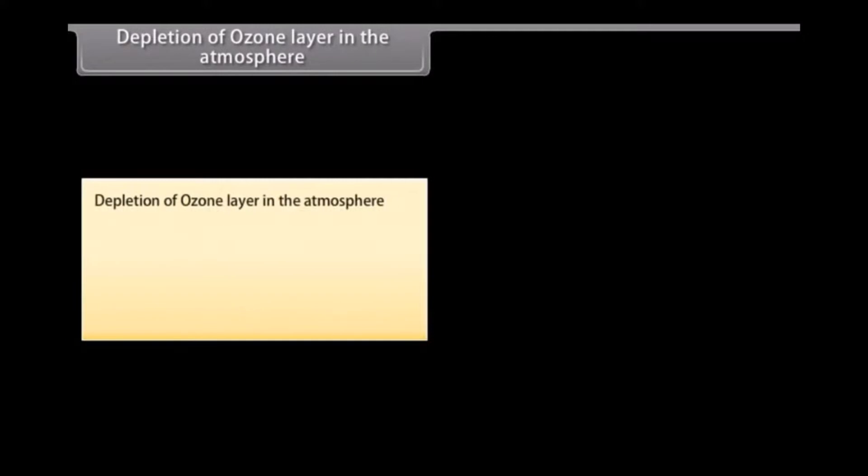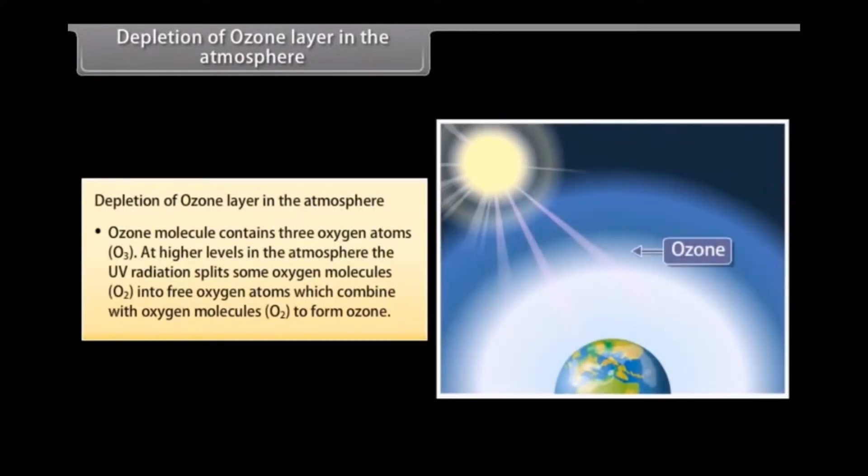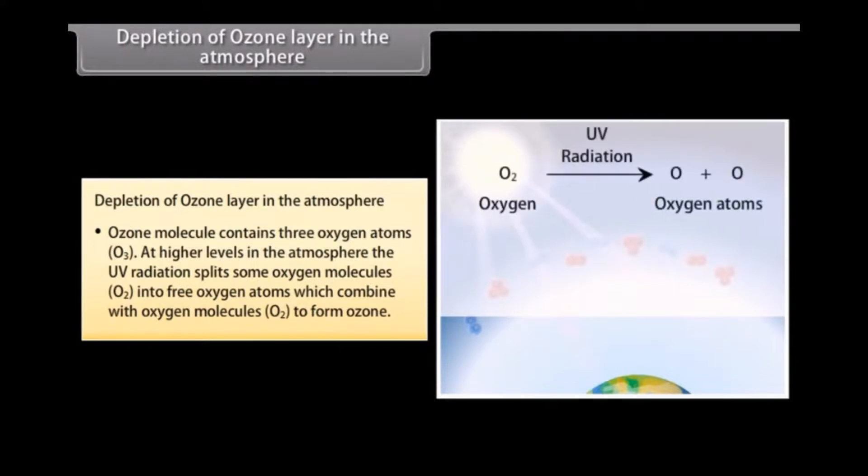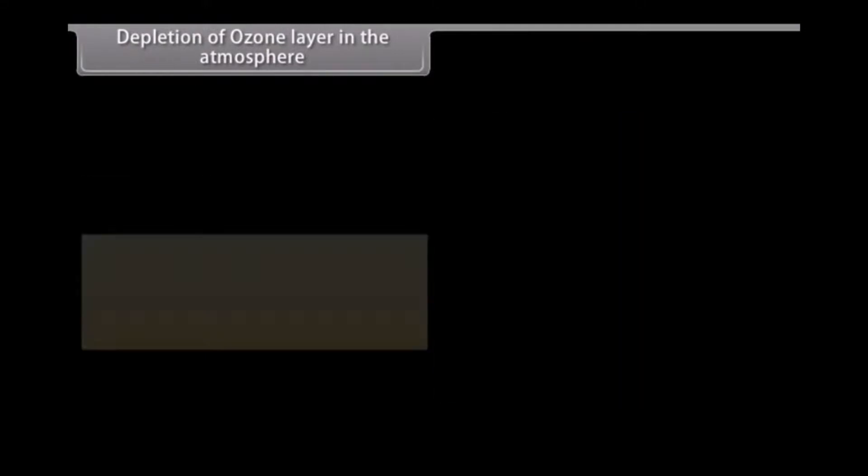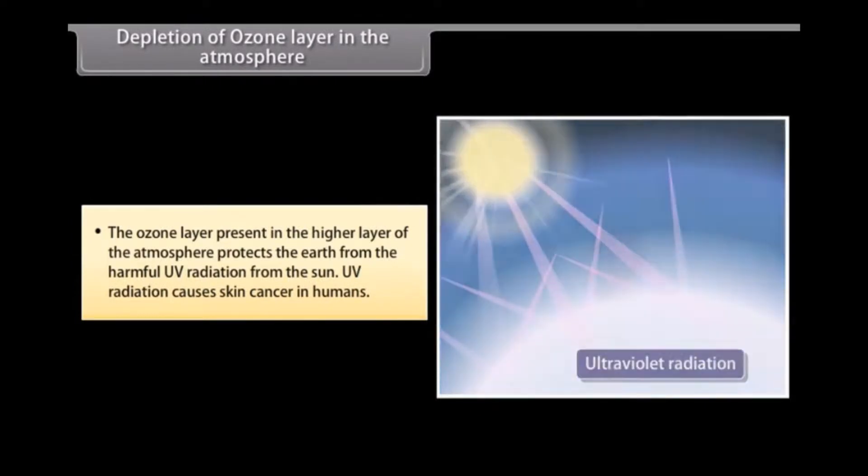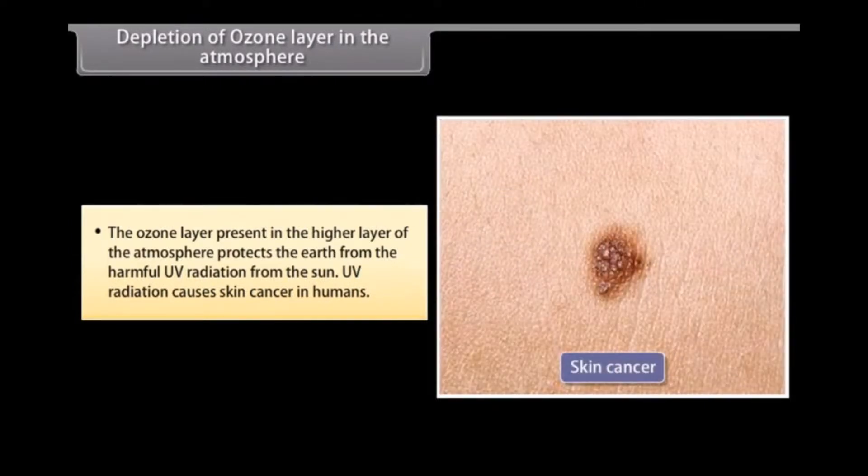Depletion of ozone layer in the atmosphere. Ozone molecule contains three oxygen atoms, O3. At higher levels in the atmosphere, the UV radiation splits some oxygen molecules, O2, into free oxygen atoms, which combine with oxygen molecules, O2, to form ozone. The ozone layer present in the higher layer of the atmosphere protects the earth from the harmful UV radiation from the sun. UV radiation causes skin cancer in humans.